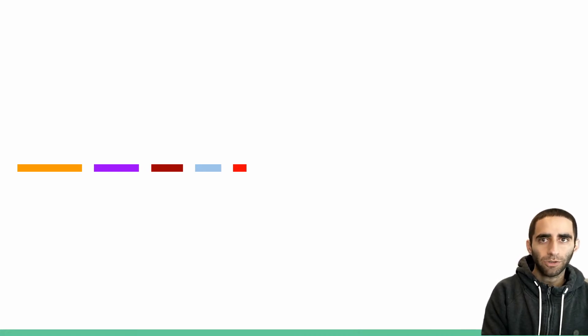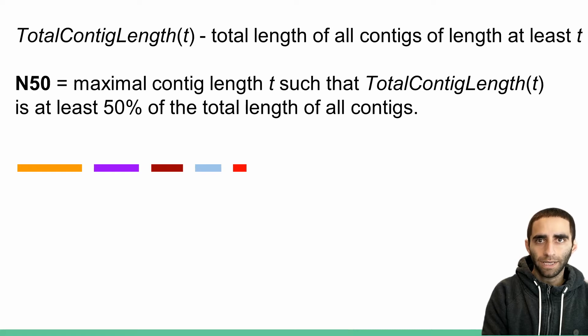Let's denote total contig length of t to be the total length, or the sum of lengths, of all contigs with a length greater than or equal to t. Using this definition, we can now define the N50 metric to be the length of the longest contig, such that total contig length of t is at least 50% of the total contig length.